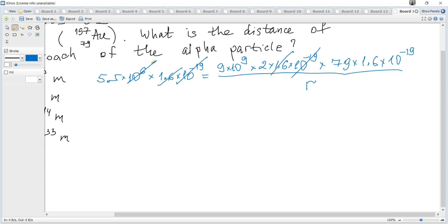It becomes 10 to the power of 3, and hence r becomes 9 times 2 times 79 times 1.6 times 10 to the power of negative 16 divided by 5.5.